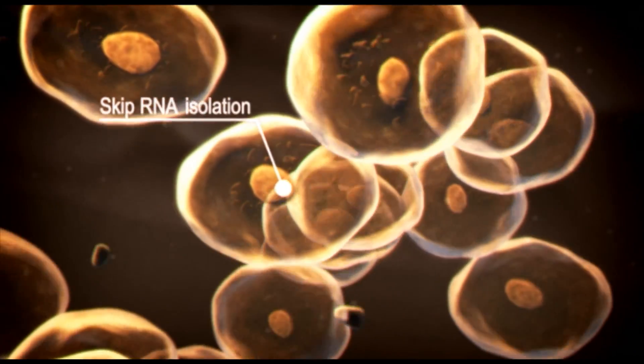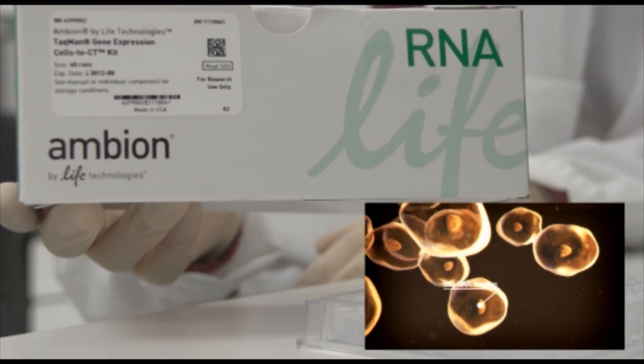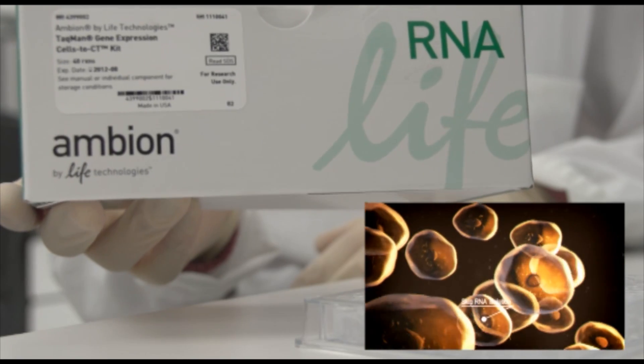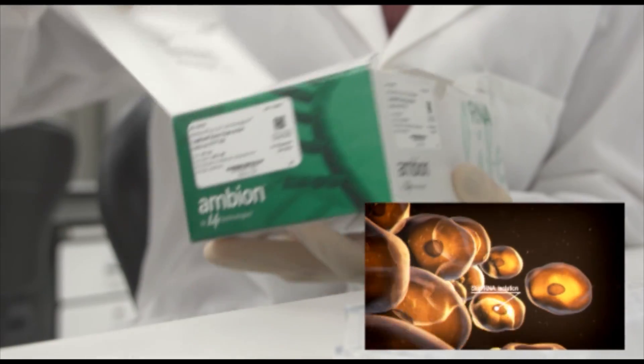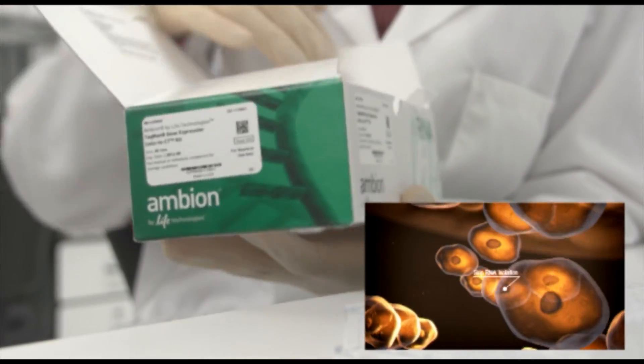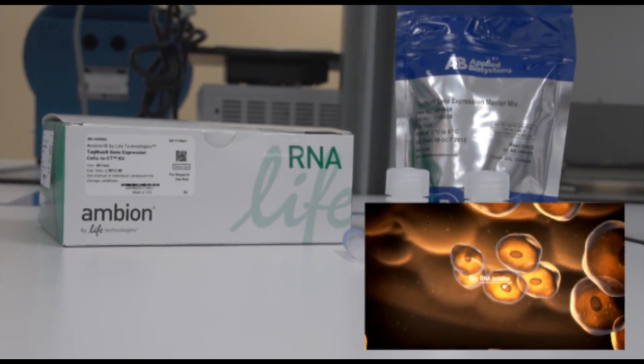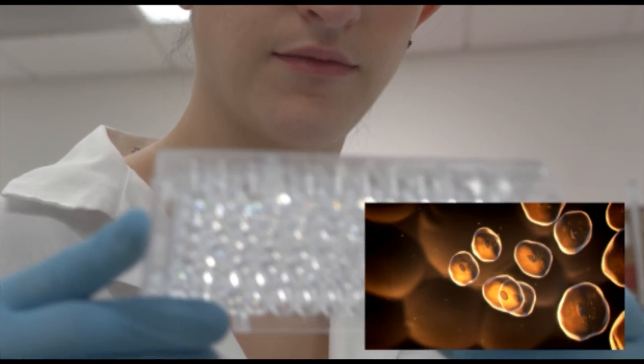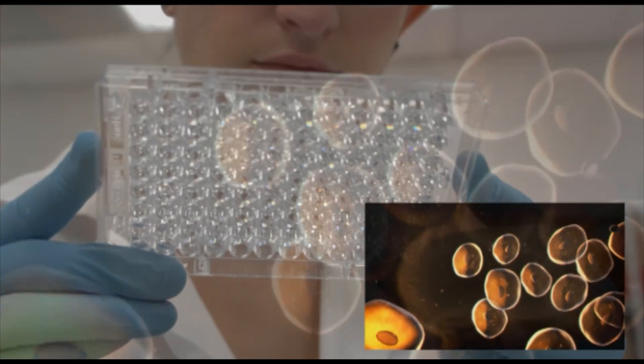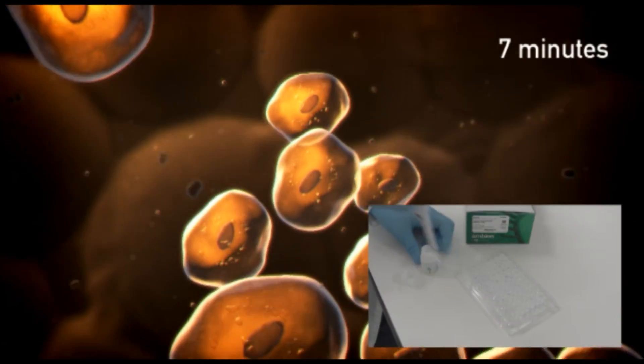Ambion cells to CT kits provide a simple and rapid method for preparing cell lysates. Relative gene expression is measured directly from cell lysates, eliminating the need to purify RNA prior to amplification. Ambion cells to CT kits use a simple 7-minute sample preparation procedure.